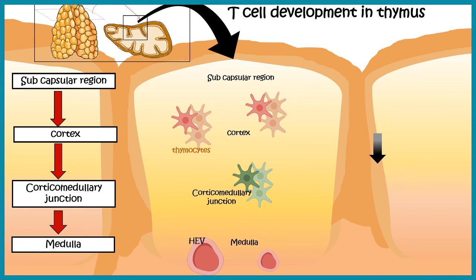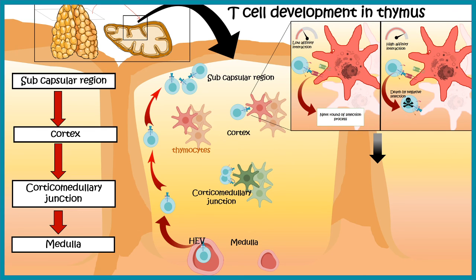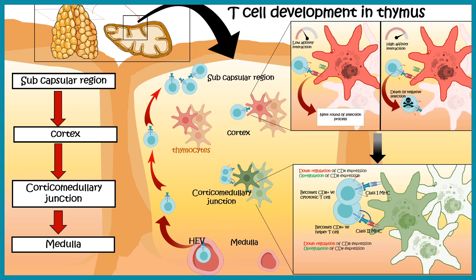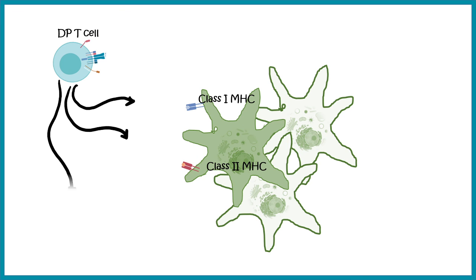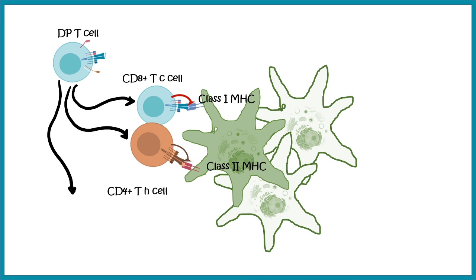NKT cell development, just like other T cells, takes place in the thymus. From the double positive T cell population — from which T helper cells and cytotoxic T cells are also born — NKT cells arise from the same subpopulation, as confirmed by lineage tracing experiments. However, the exact molecular mechanism by which the NKT lineage separates from cytotoxic or helper T cell lineages is still not known, and active research is ongoing in this field.